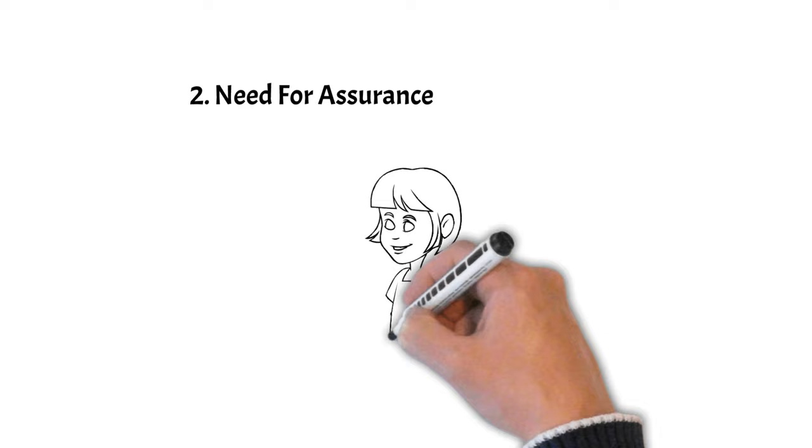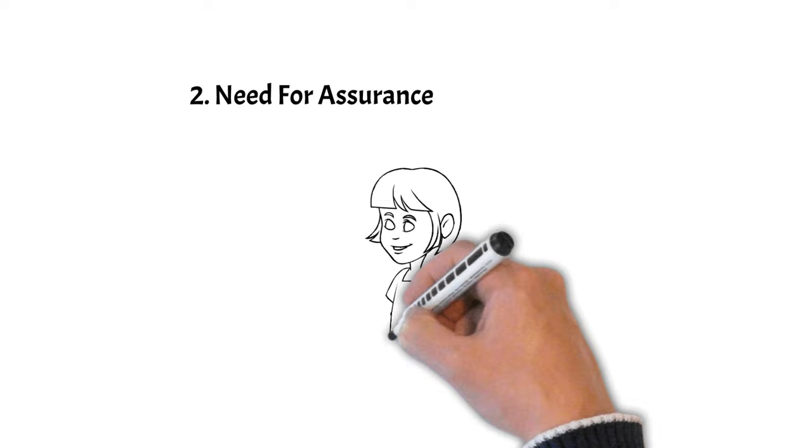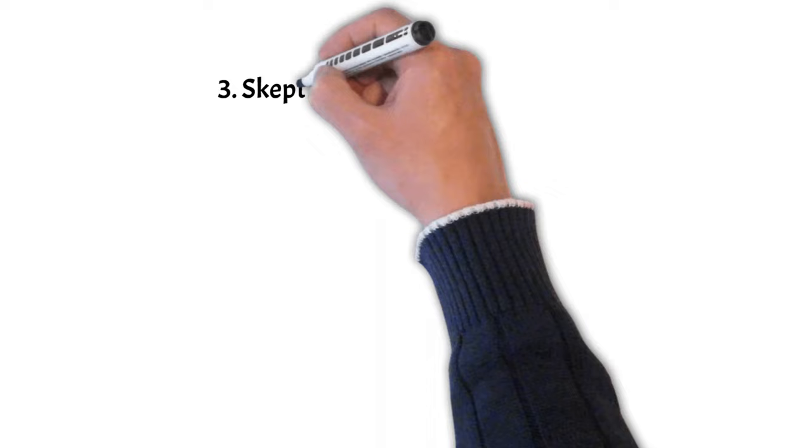Number 2: Need for Assurance. They often seek continuous reassurance and validation, which can be taxing on relationships, especially with people who value independence or have a more carefree attitude.